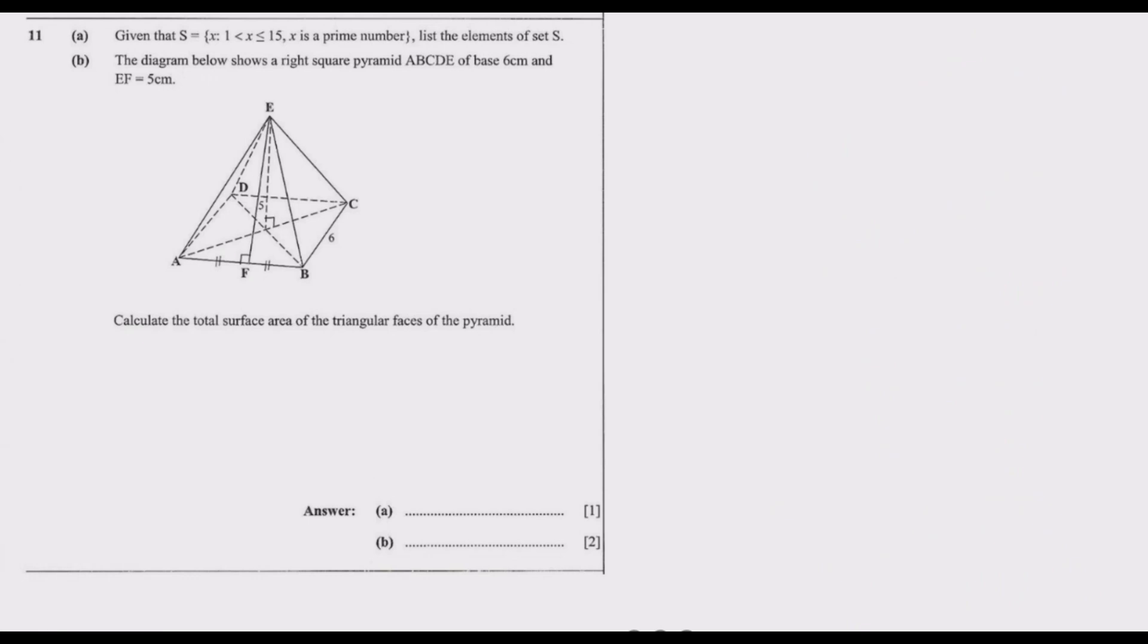Let us move to question 11. Question 11 reads: Given that S is a set such that x is greater than 1 but less than or equal to 15, and x is a prime number, list the elements of set S. We know what a prime number is - that number which has only two factors, itself and 1, and that excludes 1.